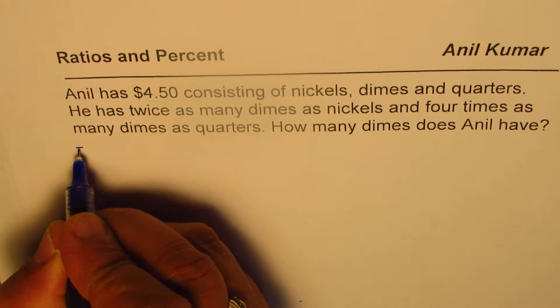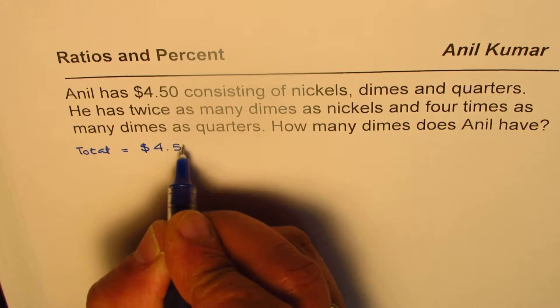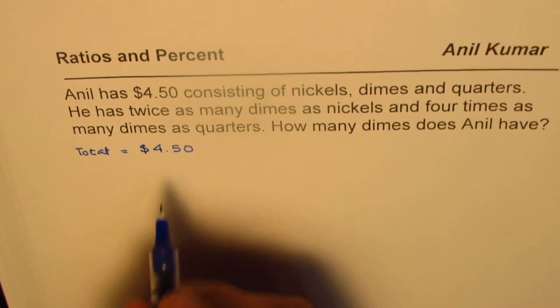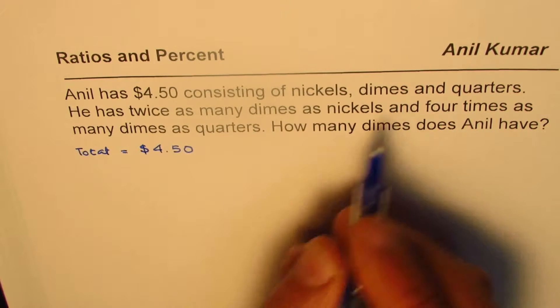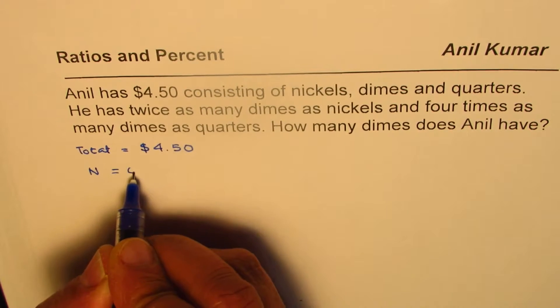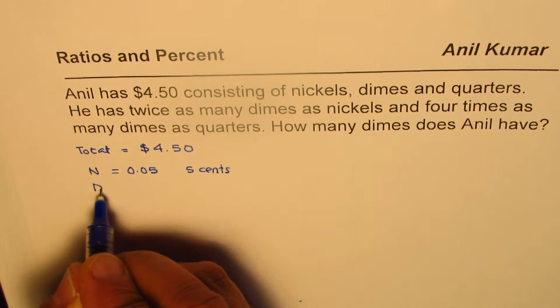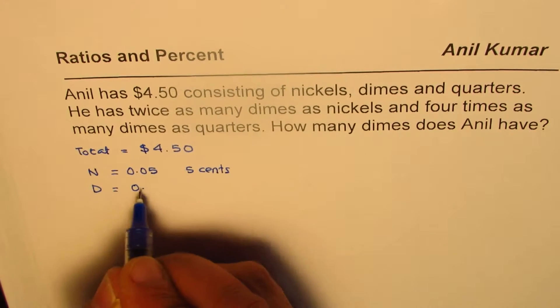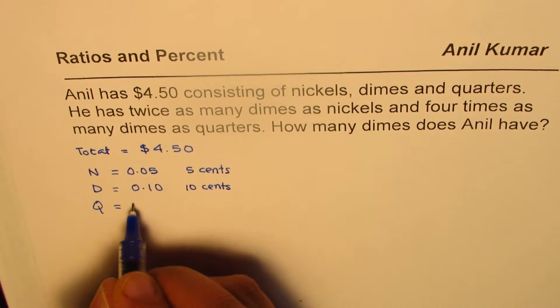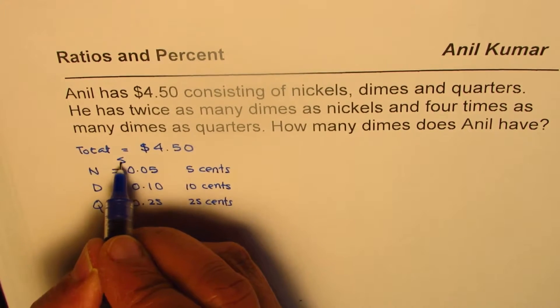So we know the total amount here is $4.50 and this is formed with nickels, dimes and quarters. So nickels, as you know, can be N whose value is 0.05 or 5 cents. Dimes, let me write this as D, is value of each dime is 10 cents. Quarters, let me write this as Q, is 0.25 or 25 cents. These amounts are in dollars.